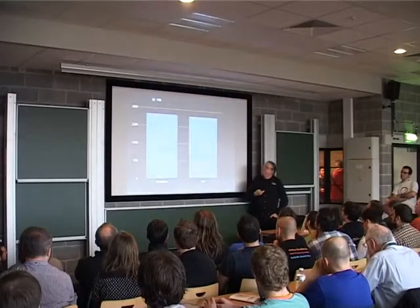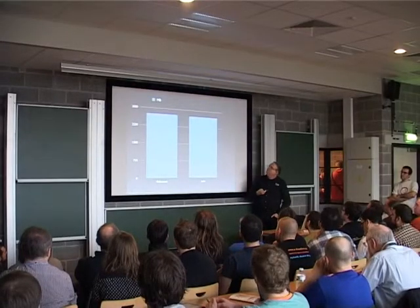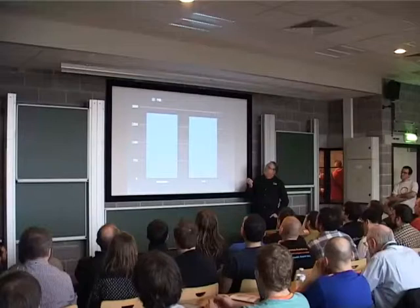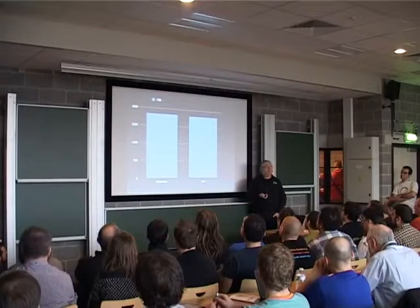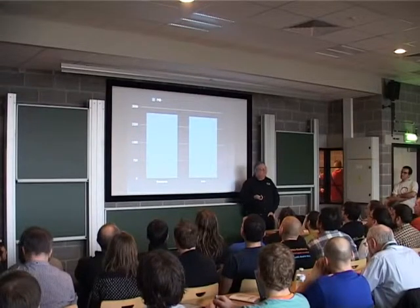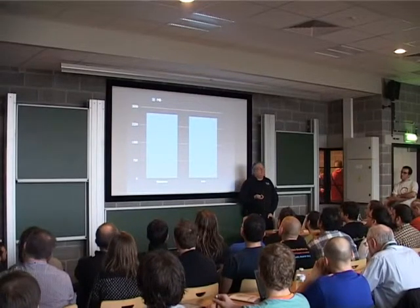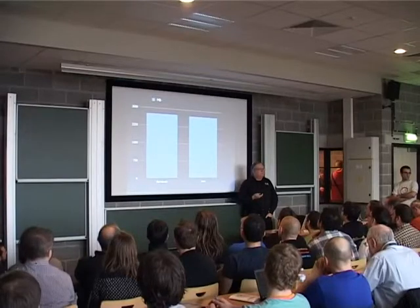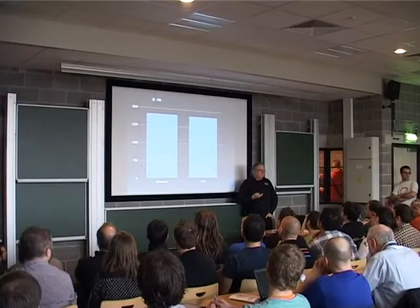And disk footprint: essentially the same. JSON is actually a little bit smaller. So no significant disk footprint benefit either way.